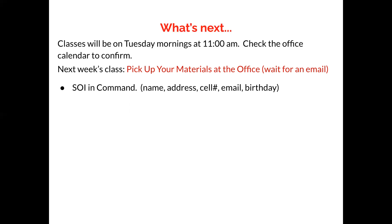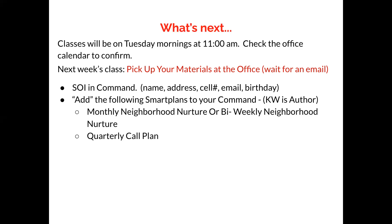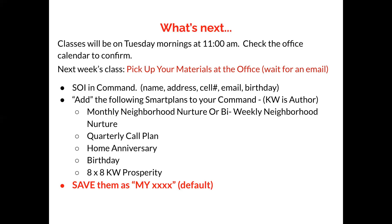Next week, let's make sure we have all of our SOI in Command. We really want you using Command because all of the smart plans are in there, and that's going to tell you what you have to do each day. What we're looking for is name, address, cell phone, email, and hopefully birthday. I want you to write down and add the following smart plans to Command: the monthly or bi-weekly neighborhood nurture, the quarterly call plan, the anniversary plan, the birthday plan, and the 8x8 KW Prosperity plan.